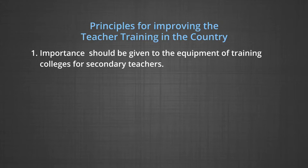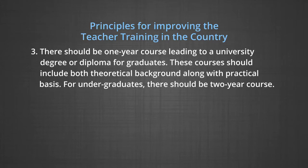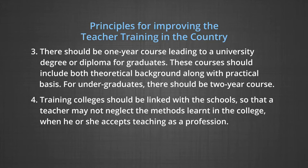The following principles were laid down to improve teacher training: importance should be given to equipping training colleges for secondary teachers; practicing schools should be attached to each college to correlate theory with practice; there should be a one-year course leading to a university degree or diploma for graduates, covering both theory and practice; a two-year course for undergraduates; and training colleges should be linked with schools so that teachers do not neglect methods learned in college. As a result, training institutions increased and separate courses were provided for graduates and undergraduates.